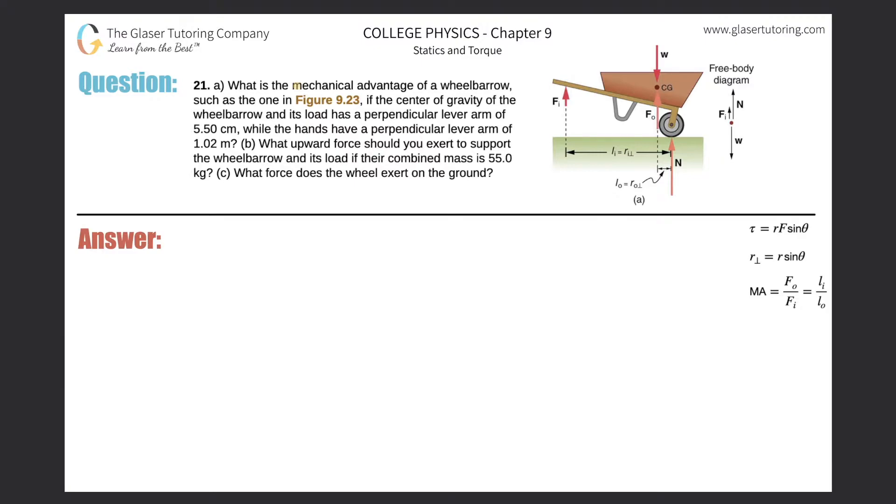Number 21, what is the mechanical advantage of a wheelbarrow such as the one in Figure 9.23 if the center of gravity of the wheelbarrow and its load has a perpendicular lever arm of 5.5 centimeters while the hands have a perpendicular lever arm of 1.02 meters? All right, so here's our picture. The fulcrum is actually right here at the wheel.